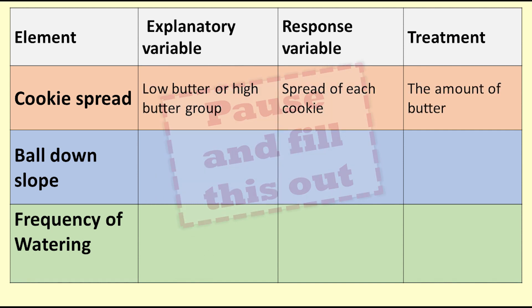For the cookie experiment, the explanatory variable is whether it is in the low butter or high butter group. The response variable is the measure of the spread of the cookie. The treatment is the amount of butter.